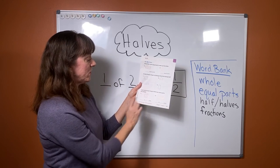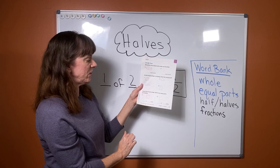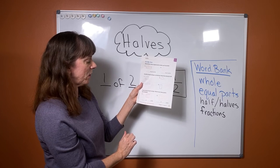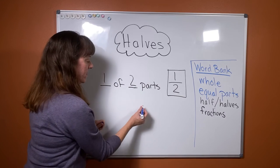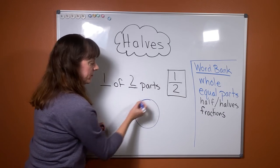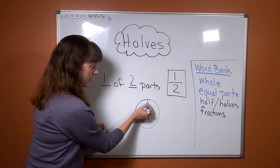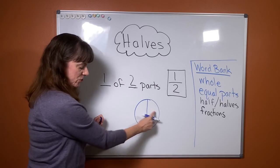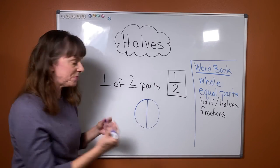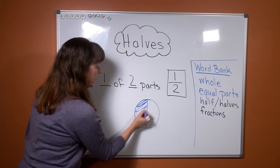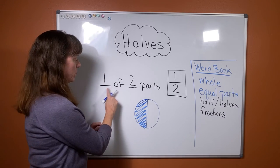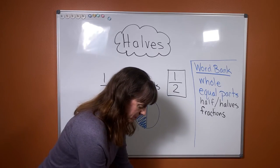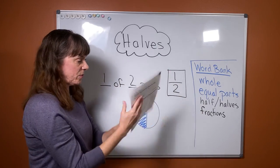For numbers eleven and twelve, color half of each shape. Write how many parts are shaded. So what that means is if... I'm going to draw my cookie again, and it is split into two equal parts. I am going to shade one of those two equal parts. One of two parts. So that's what you're going to be doing on eleven and twelve.